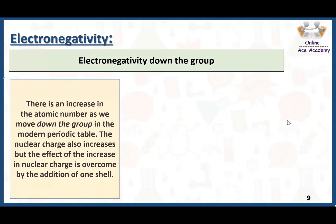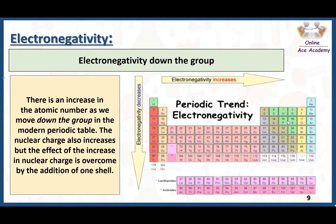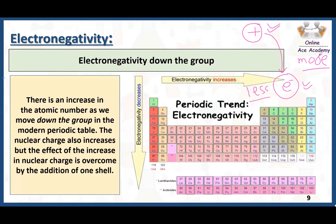Electronegativity down the group: as we move from top to bottom in the periodic table, atomic number increases but the number of shells also increases, meaning atomic radius increases. As discussed, a greater atomic radius means less electronegativity. The larger atom has greater distance between its nucleus and the electrons, so the attraction is very less and electronegativity is also less. That is why potassium is less electronegative than lithium. In general, moving down a group, electronegativity decreases due to increasing atomic radius.